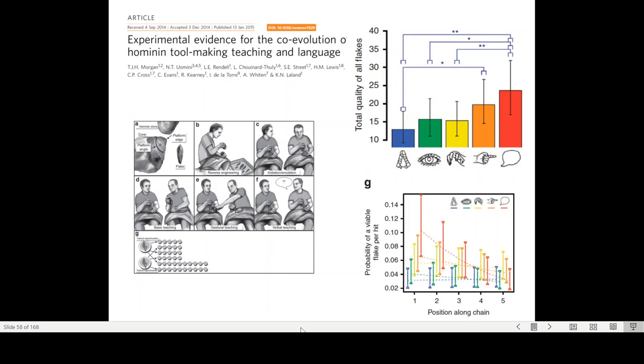The next teaching strategy they used was gestures, where a learner tries to create these tools and the teacher would gesture 'no, wait, this might be the better angle' or 'shift your stone a little bit.' Then the last teaching strategy was verbal teaching, explaining each step as you go along. They used transmission chain experiments where they looked at how information passes from student to teacher to the next learner.